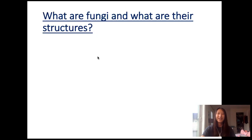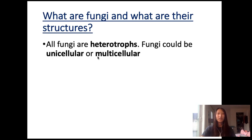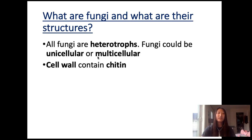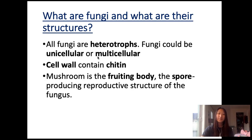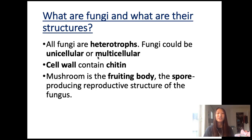Now we're moving on to fungi. What are fungi and what are their structures? Make sure you know that fungi are heterotrophs — they cannot make their own food. They could be unicellular or multicellular. They have a cell wall, but the cell wall has a different component compared to bacteria or plants. Mushroom is a fungi, but mushroom is actually the fruiting body of that fungi. A fruiting body is kind of a reproduction organ for fungi, and they produce spores — the reproductive cells for fungi — in order to allow more mushrooms to be made.